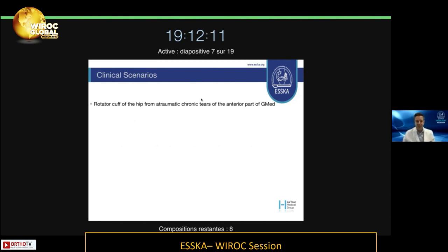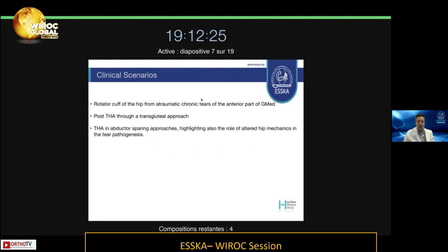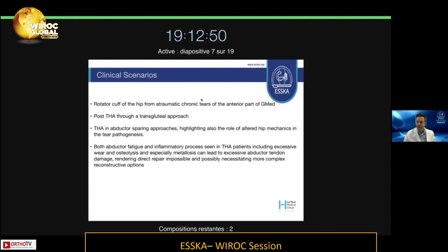The clinical scenarios: the rotator cuff of the hip from atraumatic chronic tears of the anterior part of the gluteus medius is one option. Post-THA through a transgluteal approach is an iatrogenic tear, or THA in abductor-sparing approaches such as anterior approaches — that is concomitant, highlighting the role of altered hip mechanics in tear pathogenesis. When we extrapolate this to shoulders with cuff tear arthropathies, we can wonder whether the tear created the arthritis or the arthritis created the tear.